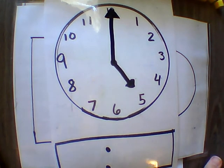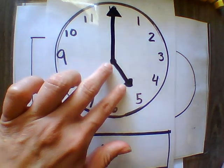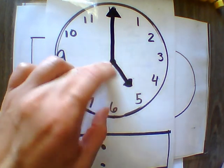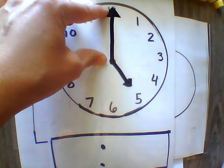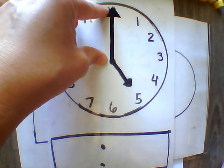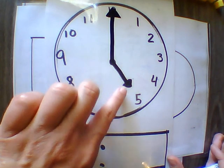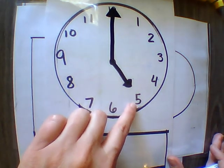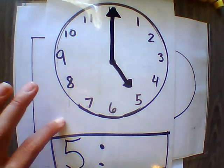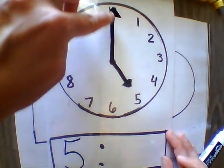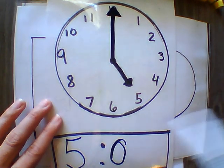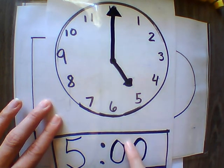Now we're going to work on time. On our clock, write down the time you see. Remember, our smaller hand is our hour and the hour always goes first. Our longer hand is our minutes and that one goes last. I notice the hour hand is pointing directly at the 5, and when the minute hand points at the 12, I write 5 o'clock. It is 5 o'clock.